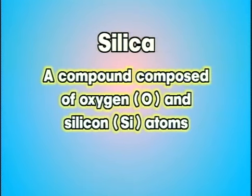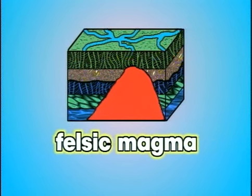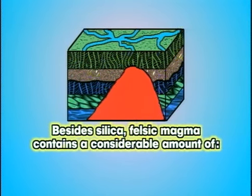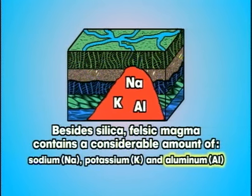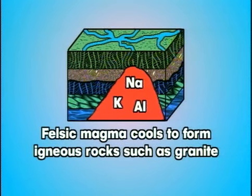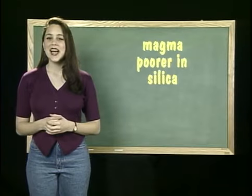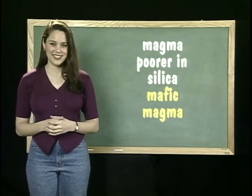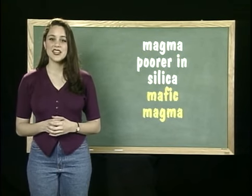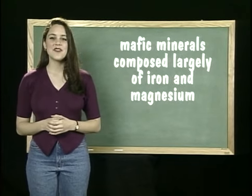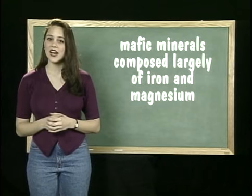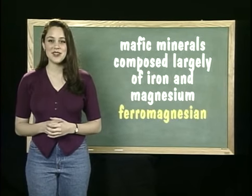Silica is a compound composed of oxygen and silicon atoms. Magma rich in silica is called felsic magma, which also contains a considerable amount of sodium, potassium, and aluminum. Felsic magma cools to form igneous rocks such as granite. Magma poorer in silica is called mafic magma. Mafic magma and the igneous rock it forms are rich in minerals containing iron and magnesium.